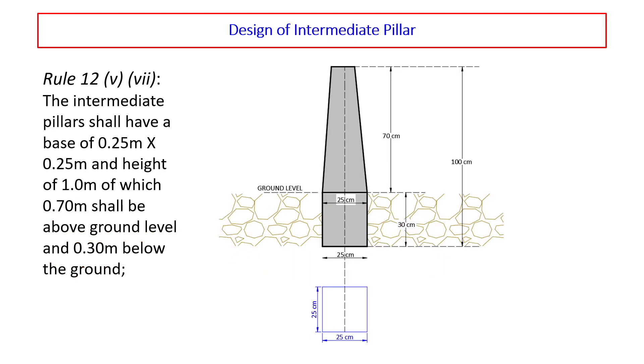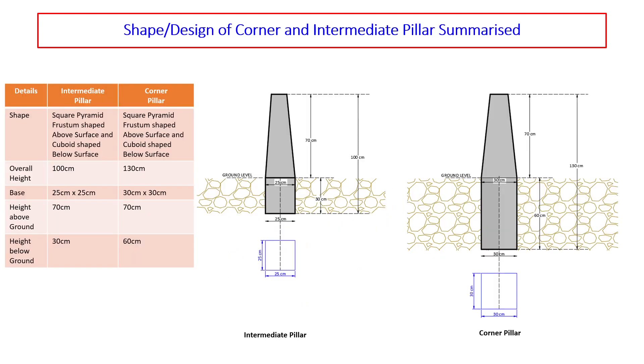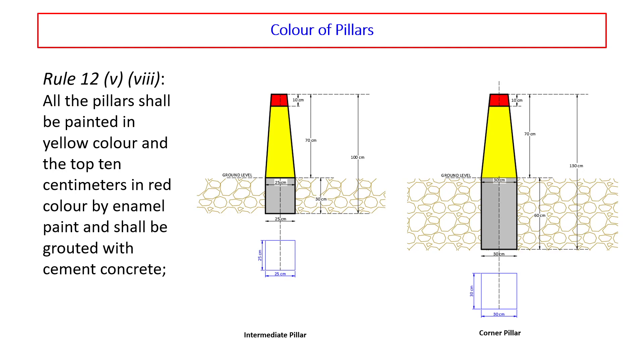Similar is the design of intermediate pillar with the difference in overall height, base and height below ground. Color of the pillars: all the pillars shall be painted in yellow color and top 10 centimeter in red enamel paint.